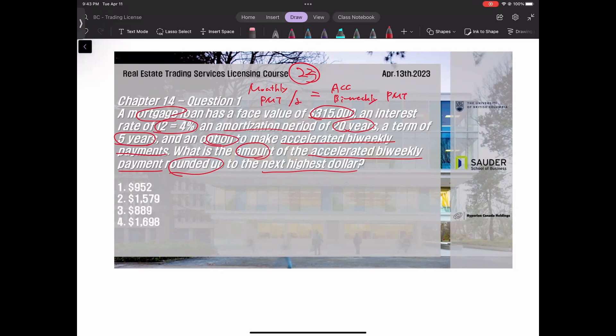Let's calculate the monthly payment. Enter: N is 20 years times 12 equals 240. I/Y is j2 equals 4, but since this is monthly we need to convert to j12, then divide by 12. PV is plus $315,000, which is money coming into my account.